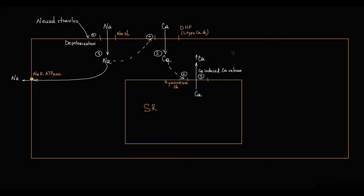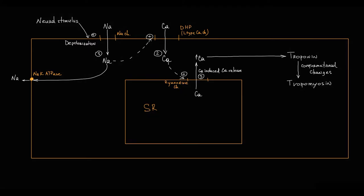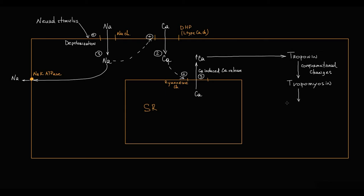Calcium binds to the troponin molecule. Troponin induces conformational changes in the tropomyosin molecule, and these changes expose binding sites on the actin molecule. This permits myosin molecules to bind to actin binding sites, creating actin-myosin bonds that subsequently develop peak muscle tension and result in contraction.